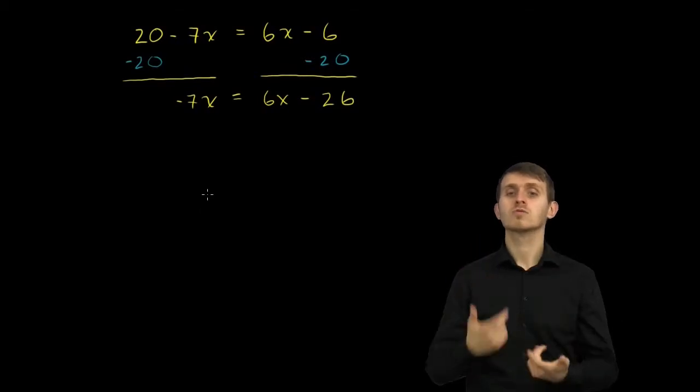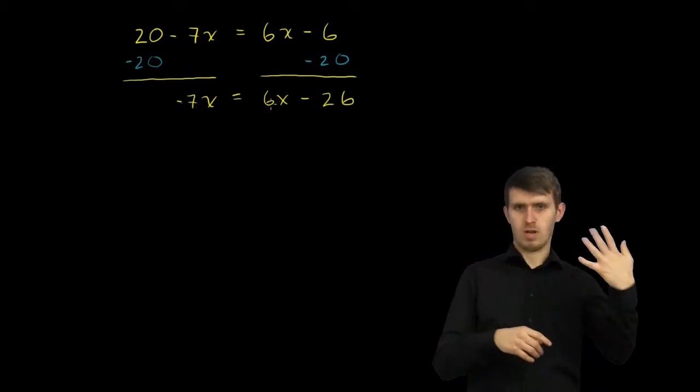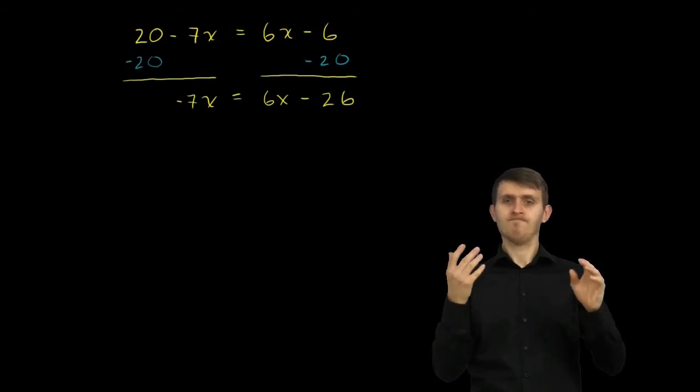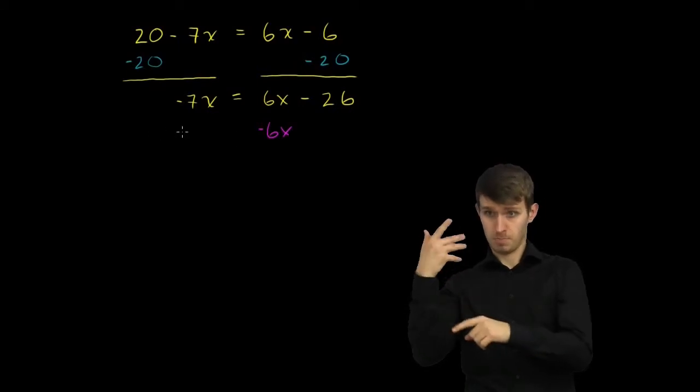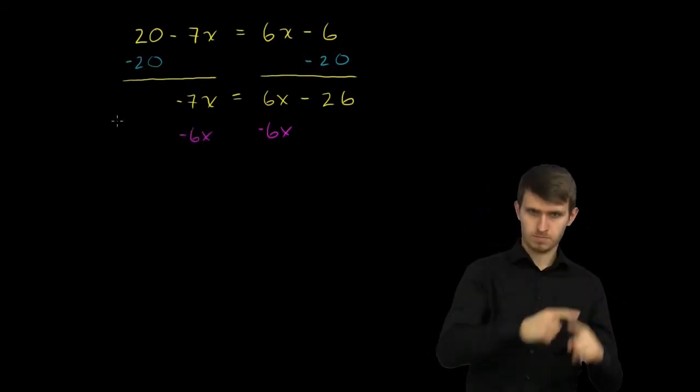Now the next thing we want to do is get all of the x terms on the left-hand side. So we don't want the 6x here. So let's subtract 6x from both sides. Subtract 6x from the right. Subtract 6x from the left.